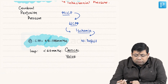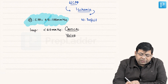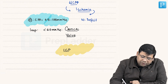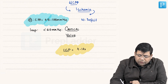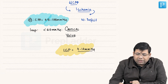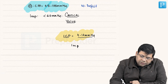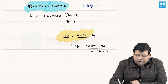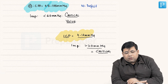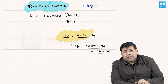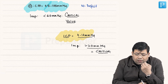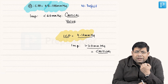The normal intracranial pressure ranges from 4 to 14 mmHg. More than 20 mmHg is considered a critical value — this is very important. We will now discuss intracranial hypertension, having started a talk on the concept of cerebral herniation or brain herniation.